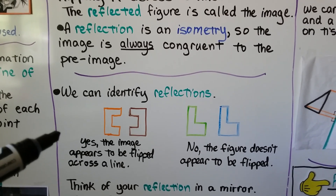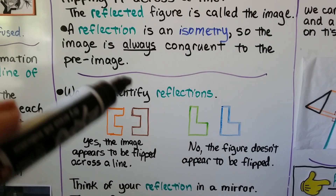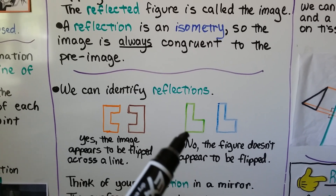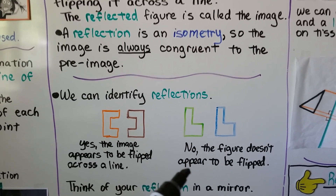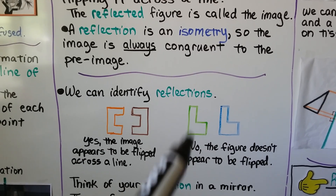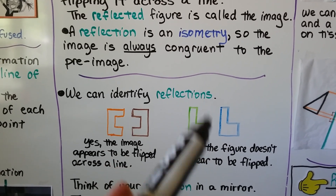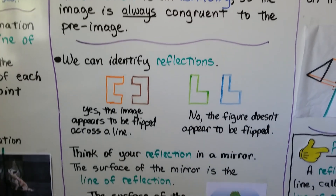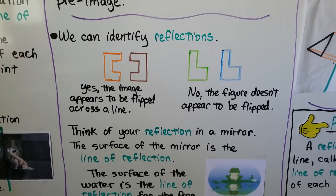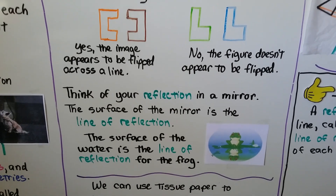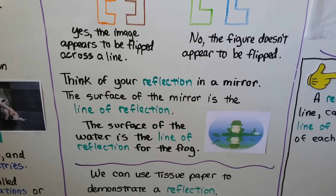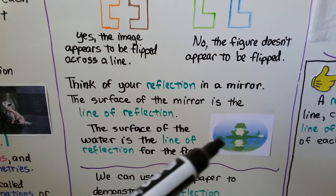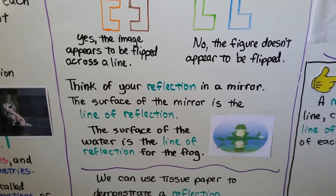Is the brown one a reflection of the orange one? Yes, because the image appears to be flipped across a line. For the green and blue one, the answer is no, because it doesn't appear to be flipped — if we had a line there, it should be flipped the other way. Think of your reflection in a mirror: the surface of the mirror is the line of reflection. Similarly, the surface of water is the line of reflection for a frog's reflection.